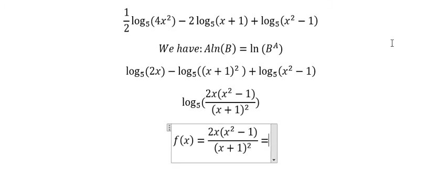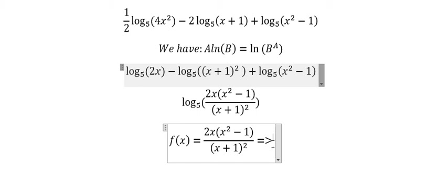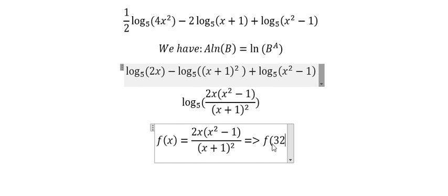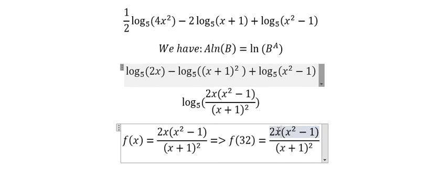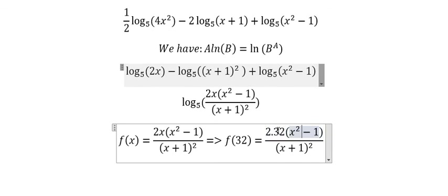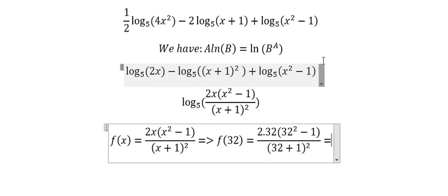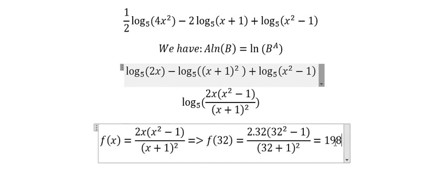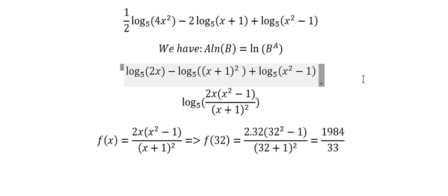Now the question asks: find the value of the function if x equals 32. So we just put f(32) equals to this one, but we just change 32 in here, here, and here. We got the final answer that should be 1984 over 33.